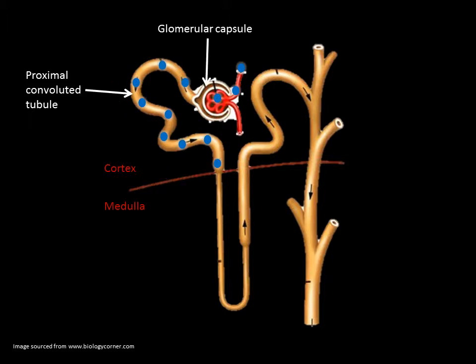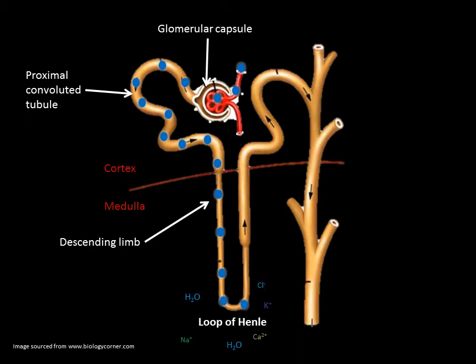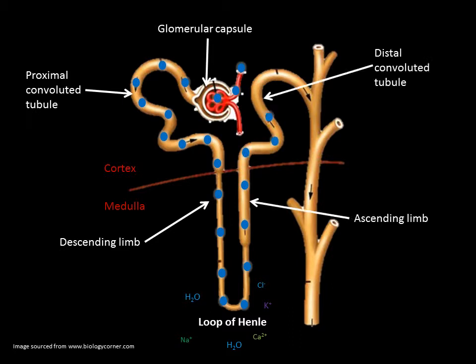The filtrate then moves through the descending limb to the loop of Henle where further reabsorption of water and ions takes place. The filtrate continues up the ascending limb and into the distal convoluted tubule where the finishing touches are done to the dilution of the filtrate.